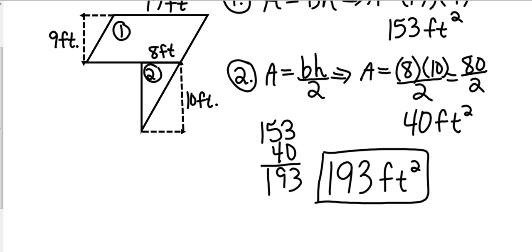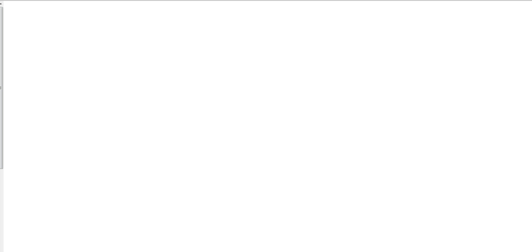Let's do another example. How about this little ice cream cone looking thing here? We've got a semi-circle, which is half of a circle, and then we've got a triangle. So we can figure out the area of those two shapes, and I'm going to make the semi-circle shape number one and the triangle shape number two.